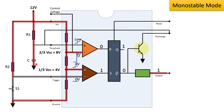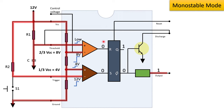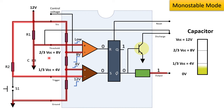The capacitor now starts charging through the R1 resistor. The voltage at the positive terminal of the threshold comparator equals the voltage across the capacitor. Meanwhile, switch S1 returns to open position. The negative terminal of the trigger comparator is again connected to 12V through R2 resistance, resulting in 0 output from the trigger comparator. Both inputs to the flip-flop are now 0, causing no change in output. The capacitor keeps charging through R1 until it reaches two-thirds of Vcc.